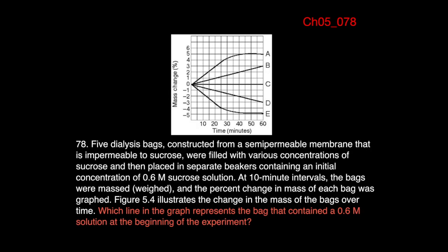Number 78. Five dialysis bags, which is semi-permeable membrane. It's permeable to water, but it says it's impermeable to sucrose. So five bags were filled with various concentrations of sucrose and then placed in separate beakers containing an initial concentration of 0.6 molar sucrose solution. So we have all beakers are 0.6 molarity in sucrose.